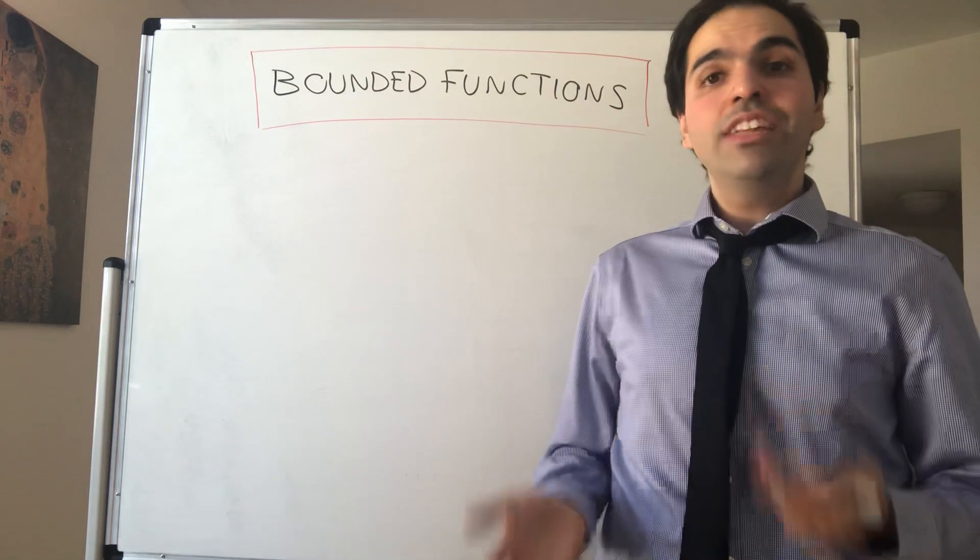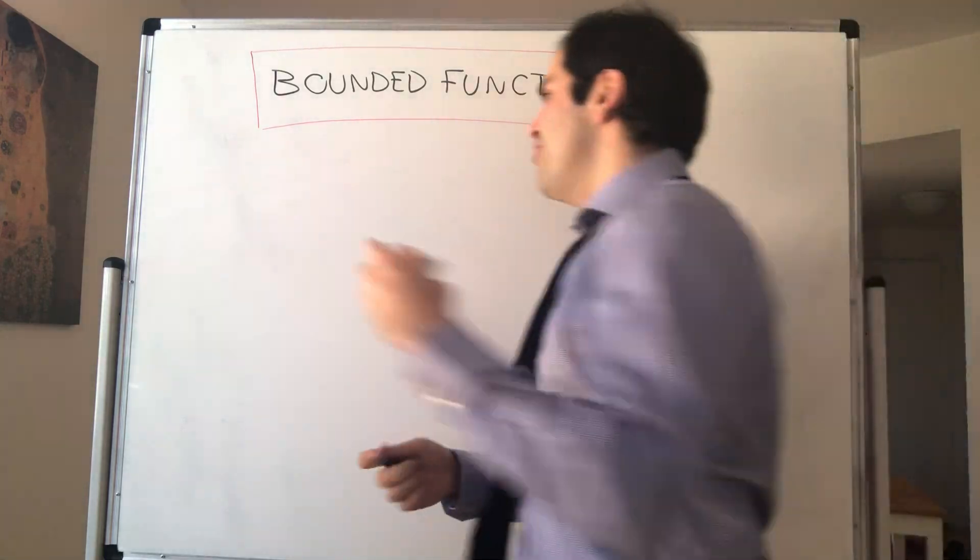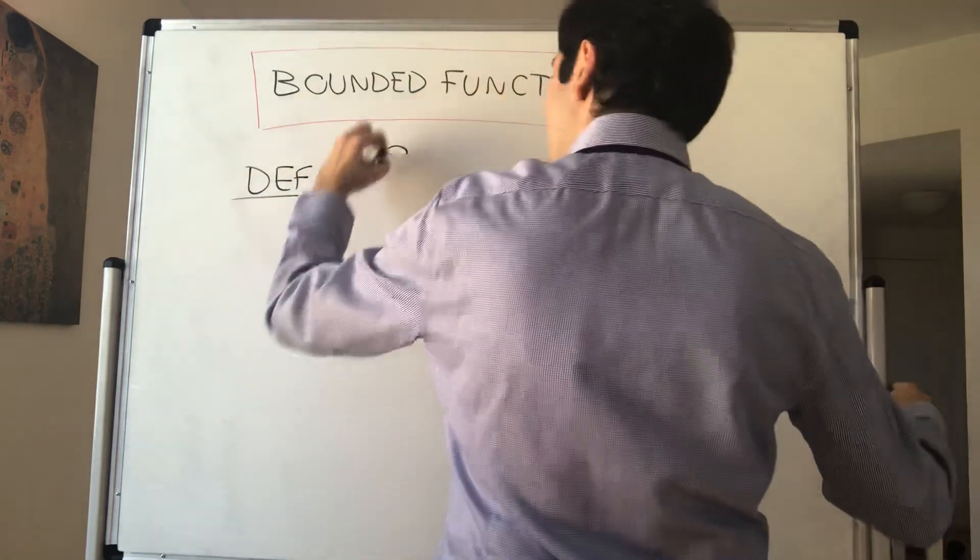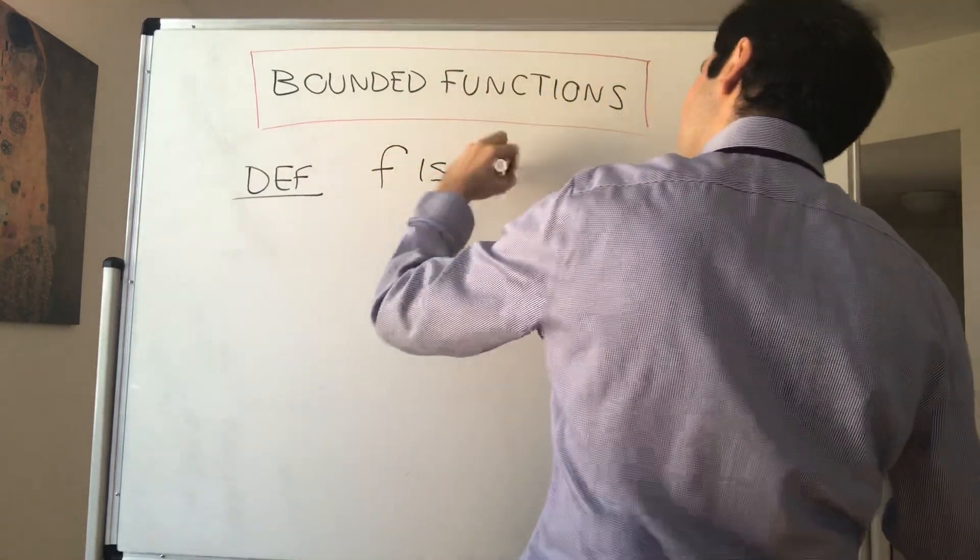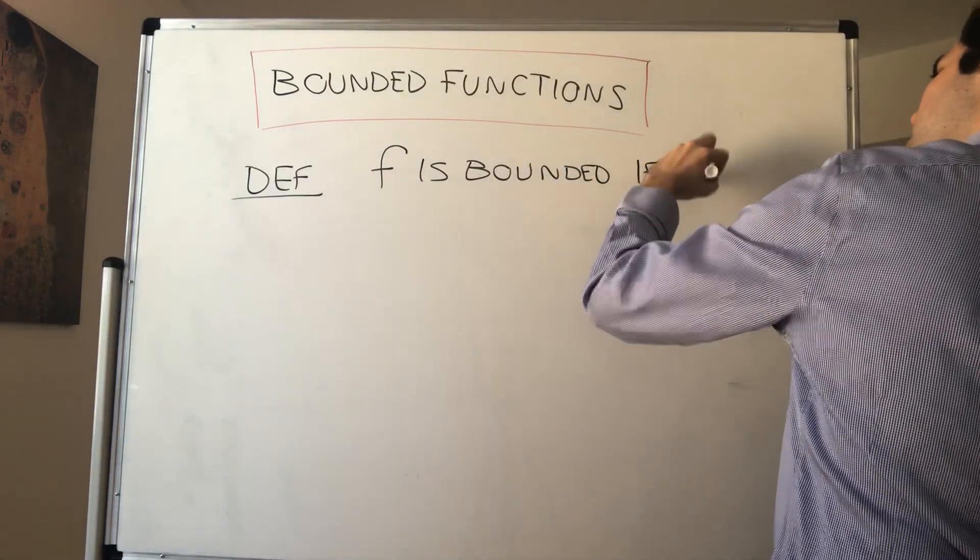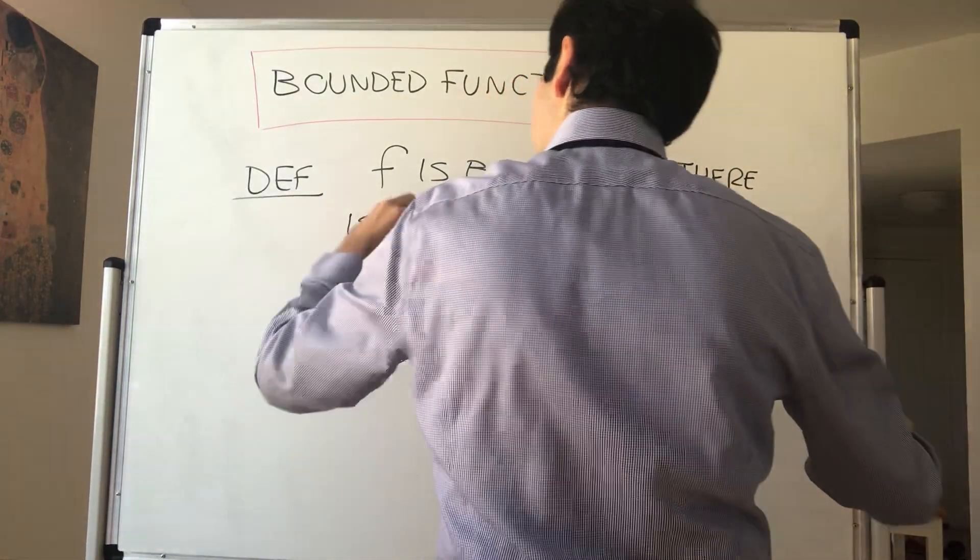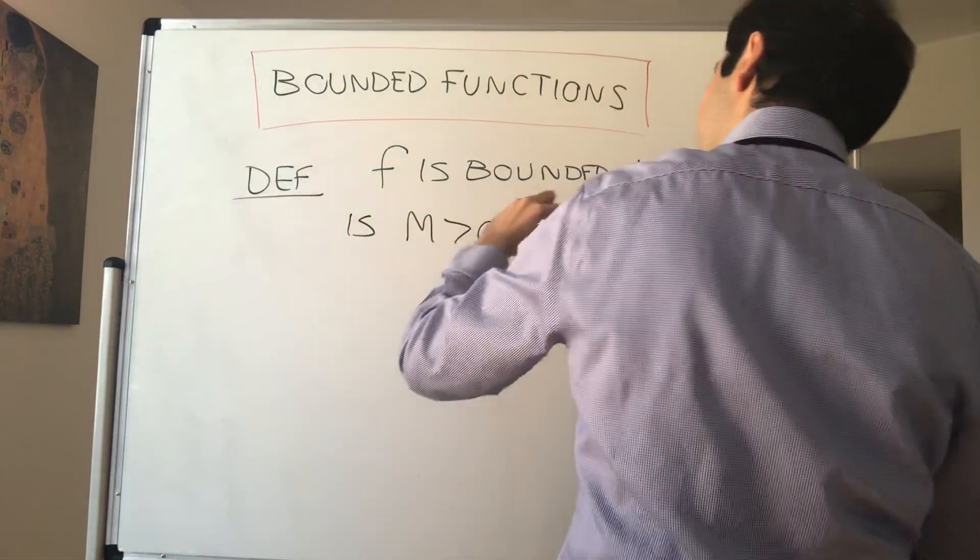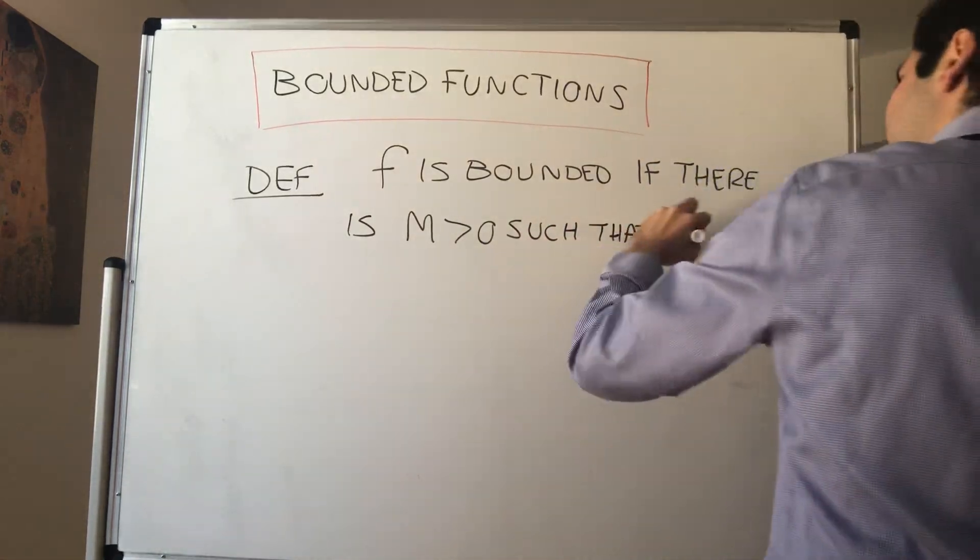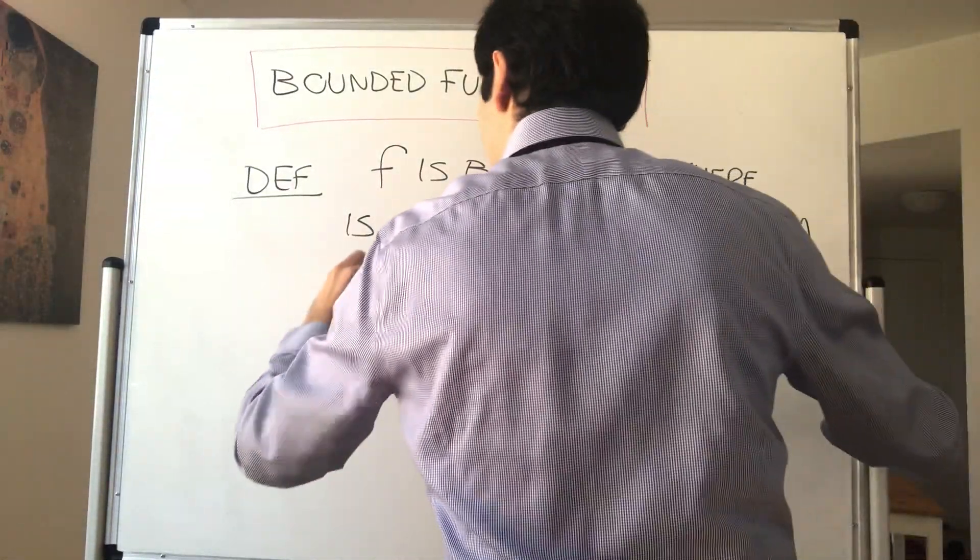Alright, thanks for watching. Today I want to talk about what it means for a function to be bounded. So definition: a function f is bounded if there is some constant M positive such that |f(x)| ≤ M for all x.